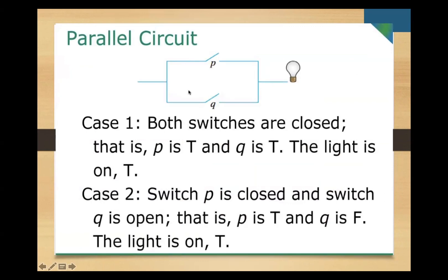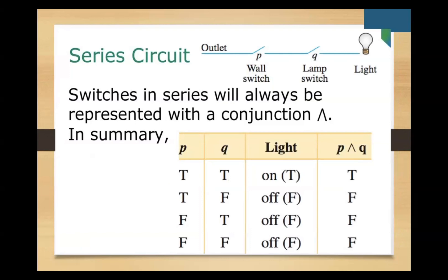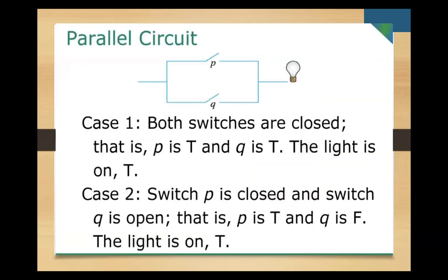For the parallel circuit, the drawing shows two lines for p and q leading to the light or bulb. Case one: both switches are closed — p is true and q is true — the light is on, so true.